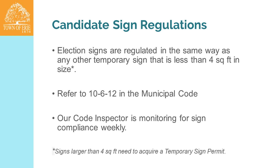These are the regulations for political signs. Gabby prepared this information. Political signs are not allowed in the right of way or anything like that, and they're regulated the same way as other temporary signs. Signs must be four square feet in size — you can refer to the municipal code for details. The code inspector is monitoring for sign compliance.